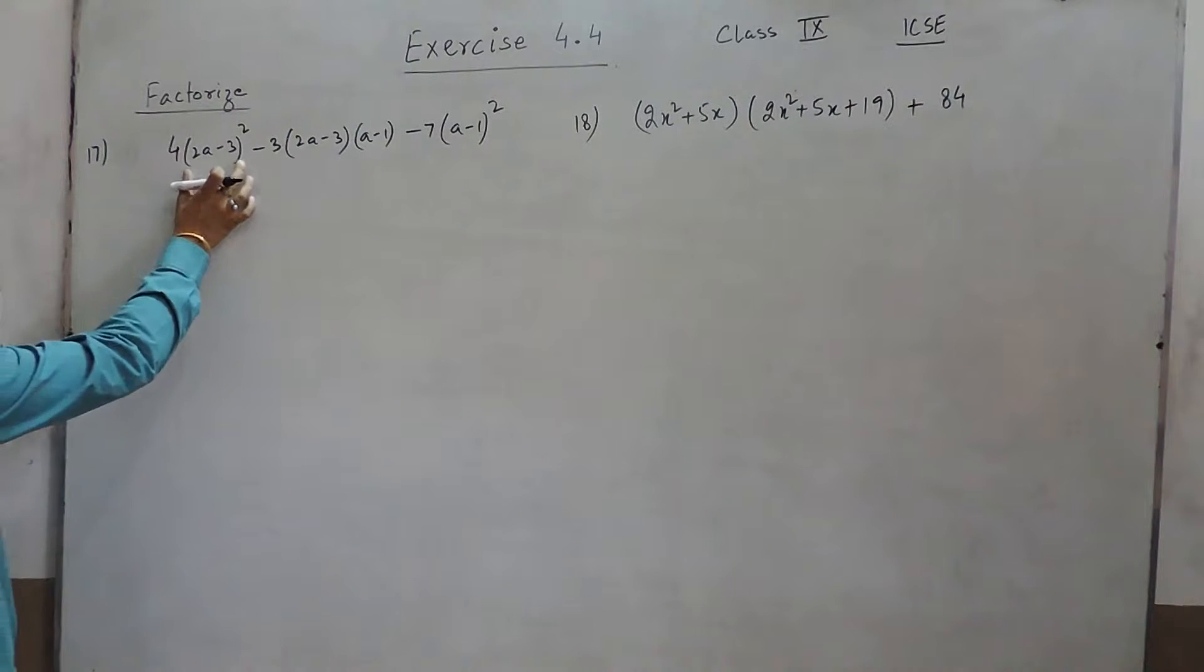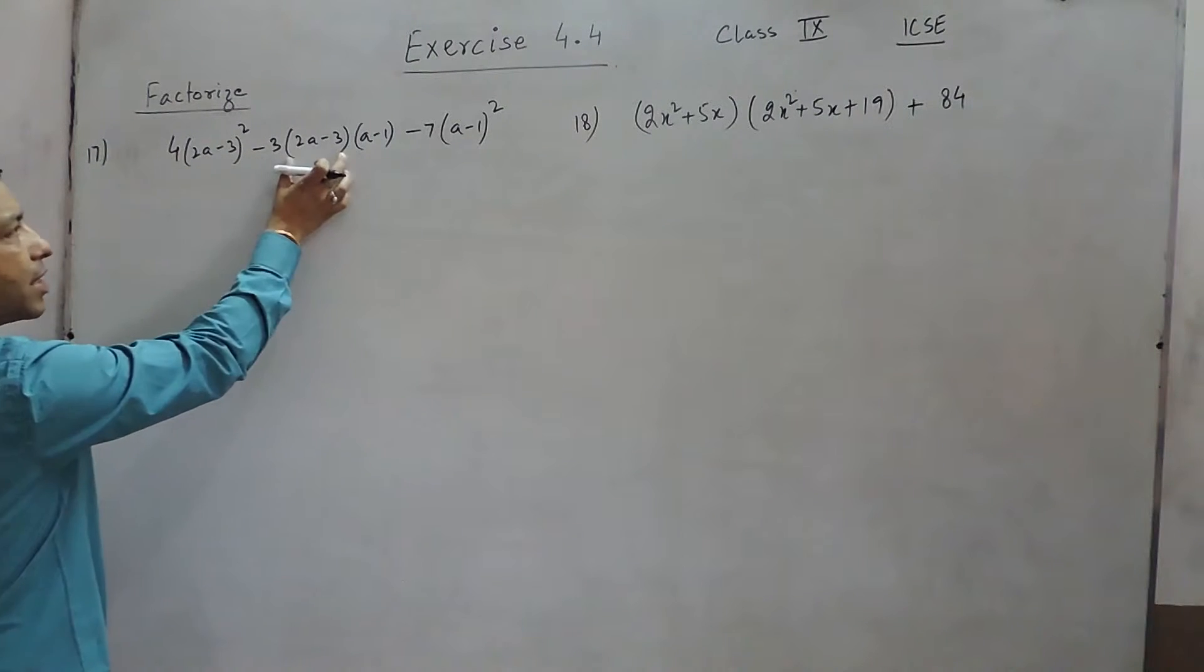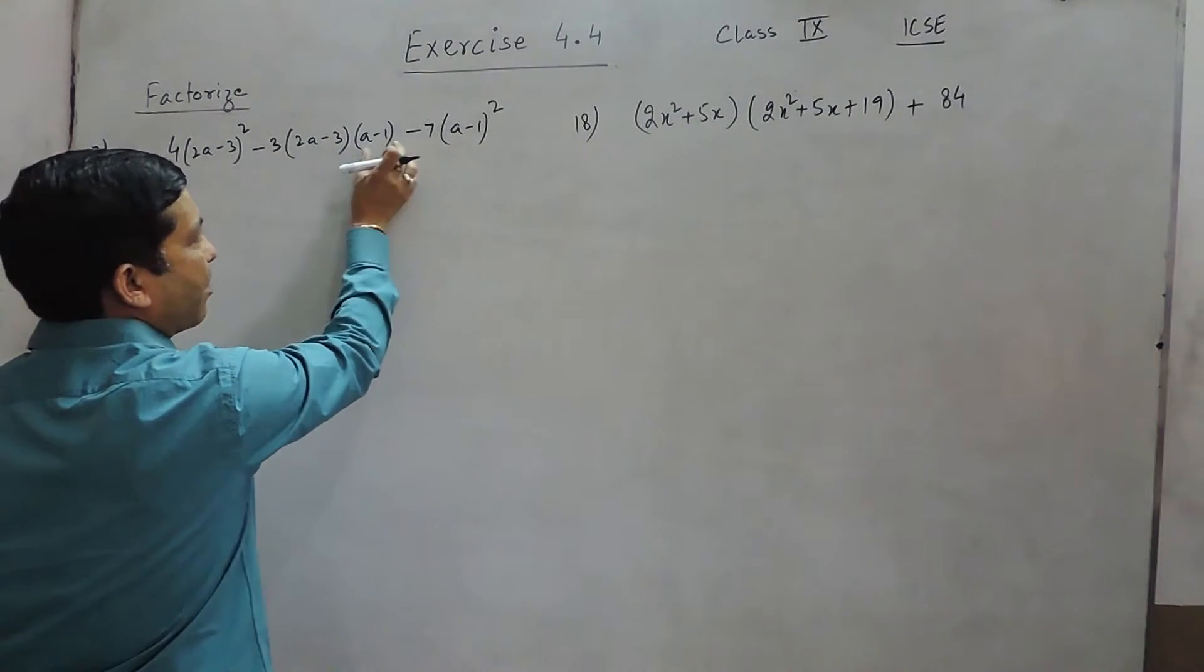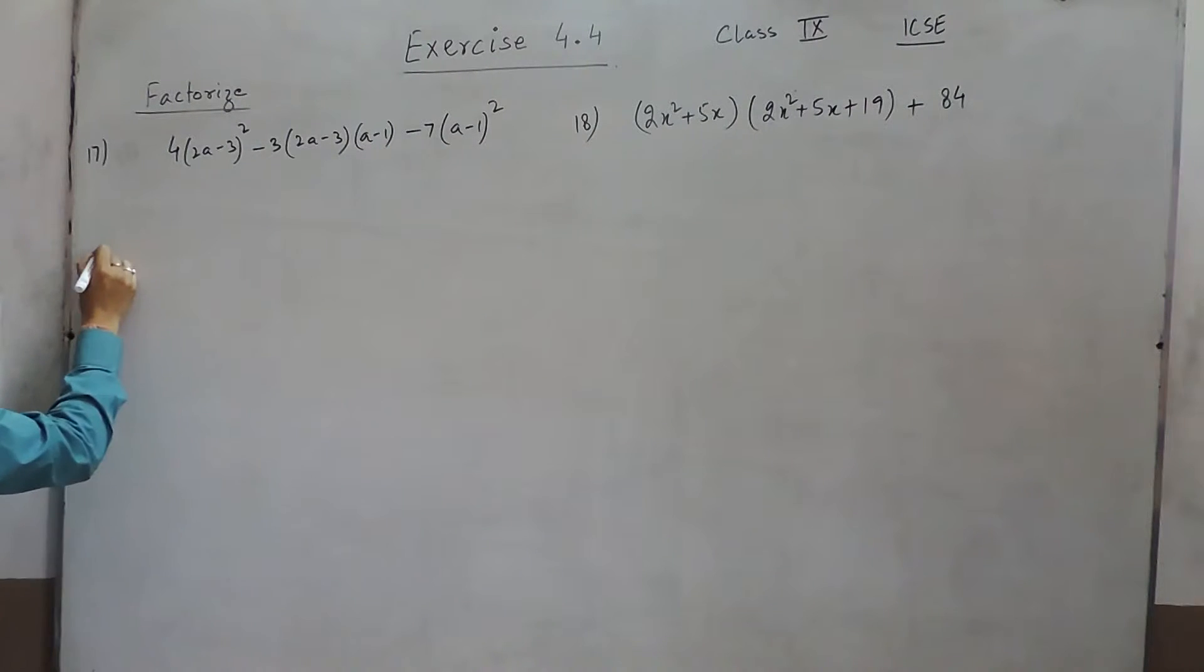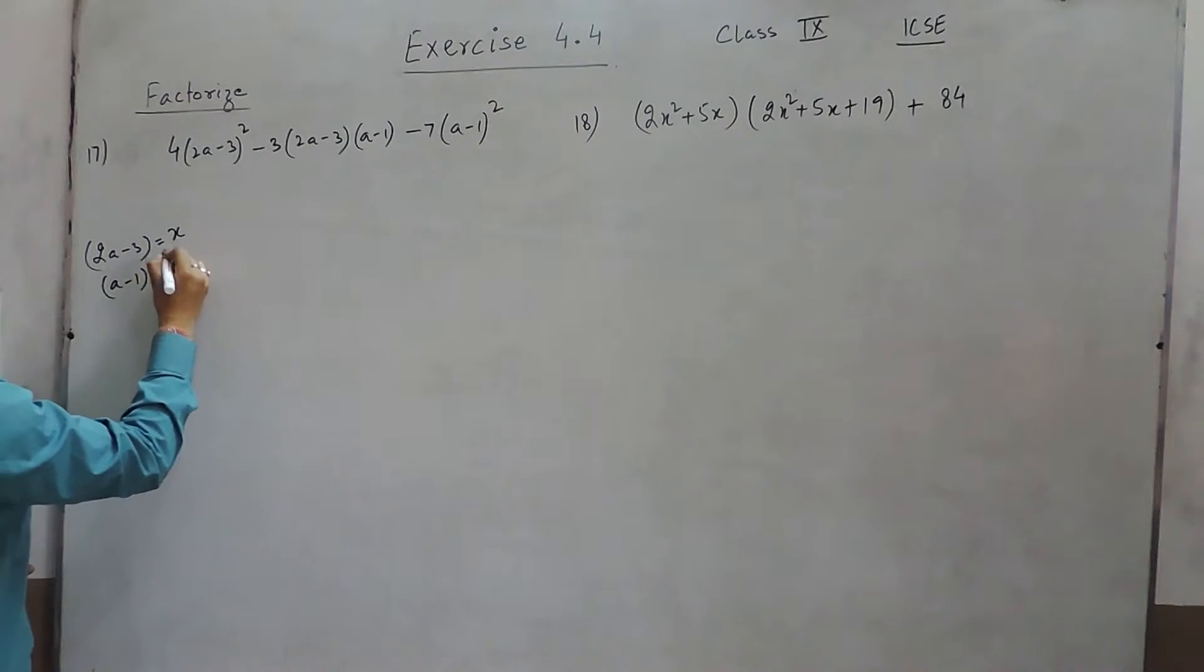Here there are two factors like one is 2a-3 and one factor is a-1. So here we can put 2a-3 as a variable like x and a-1, another factor, as another variable like y because we cannot put the two different factors as the same variable.